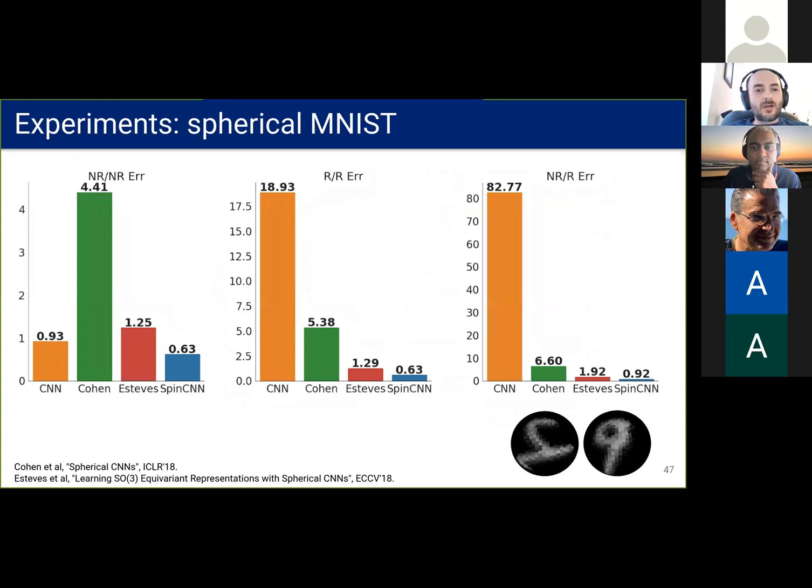All right, here are our results for the spherical MNIST introduced by Cohen et al. We show here three modes based on whether the training or the test set is rotated. Our spin-weighted spherical CNNs are in blue and they show better performance for all modes.